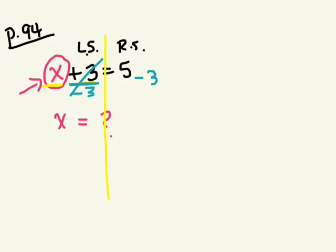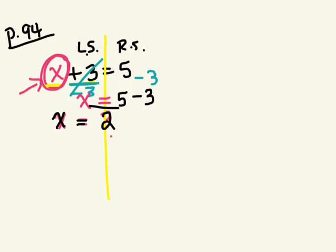On the left side, I'm left with just x. And on the right side, I have 5 take away 3. What's 5 take away 3? I'm left with x equals 2. And that was our goal — we were trying to find out what x is equal to.